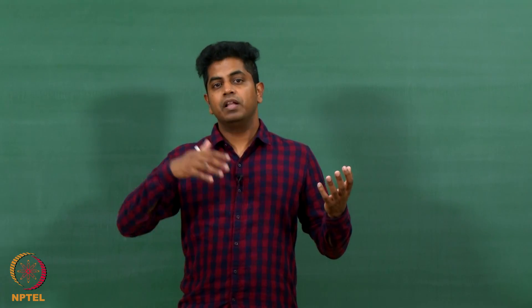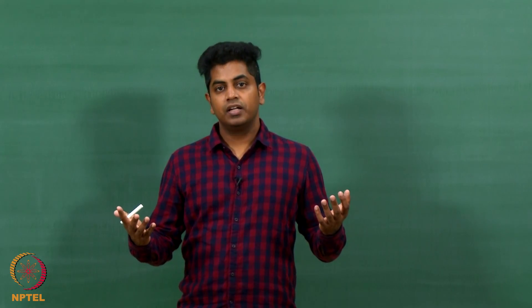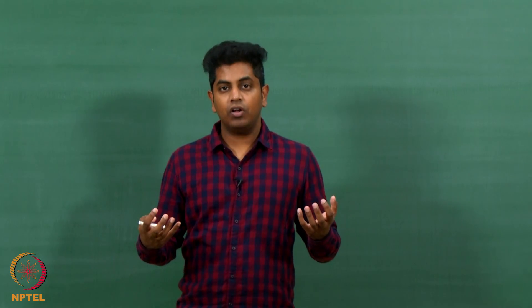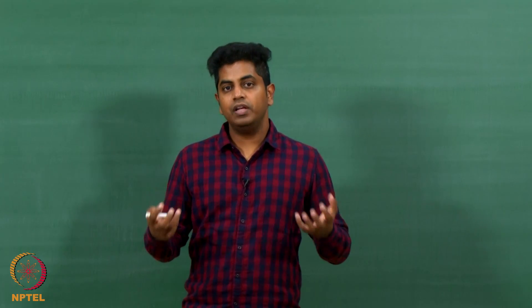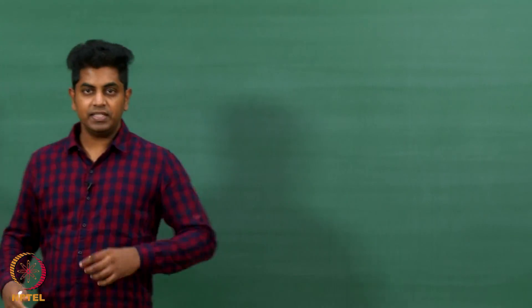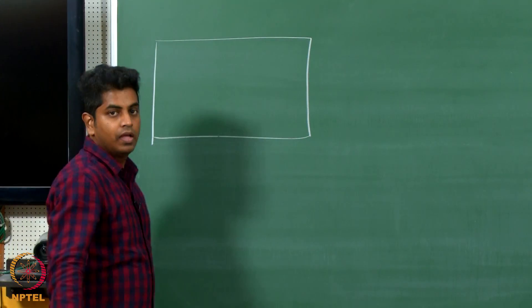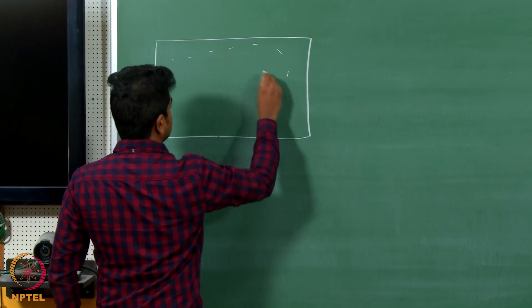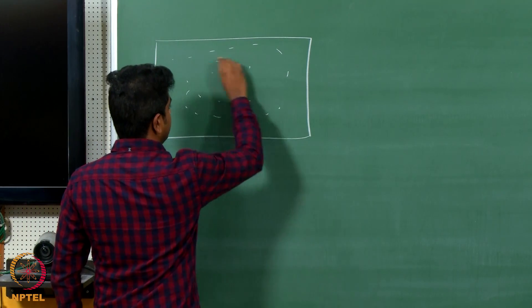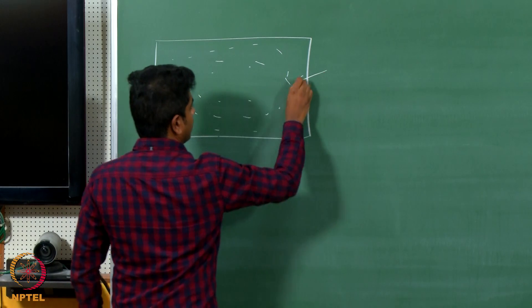What if there is a bunch of people this side, a bunch of people this side such that nobody knows each other across where friendships only happen within? What do I mean by this? By this I mean the following. Assume this is my classroom and a classroom full of some let us say 100 people.